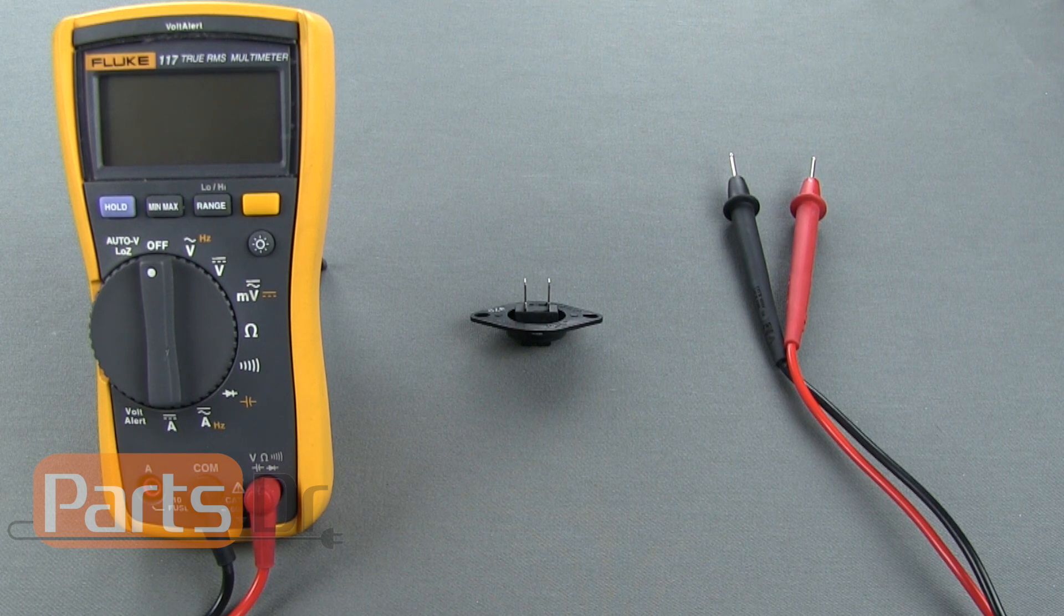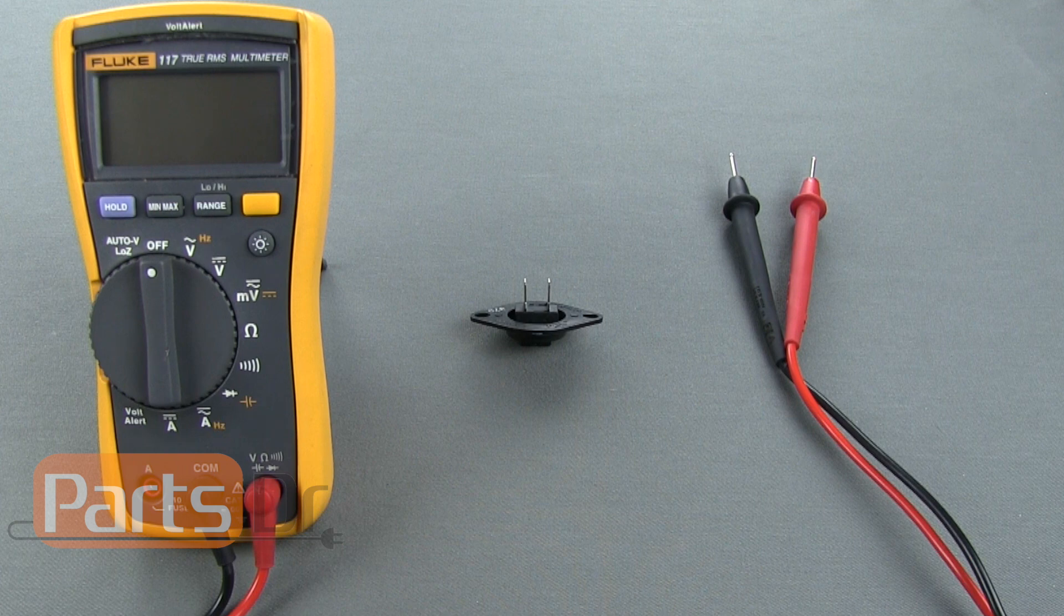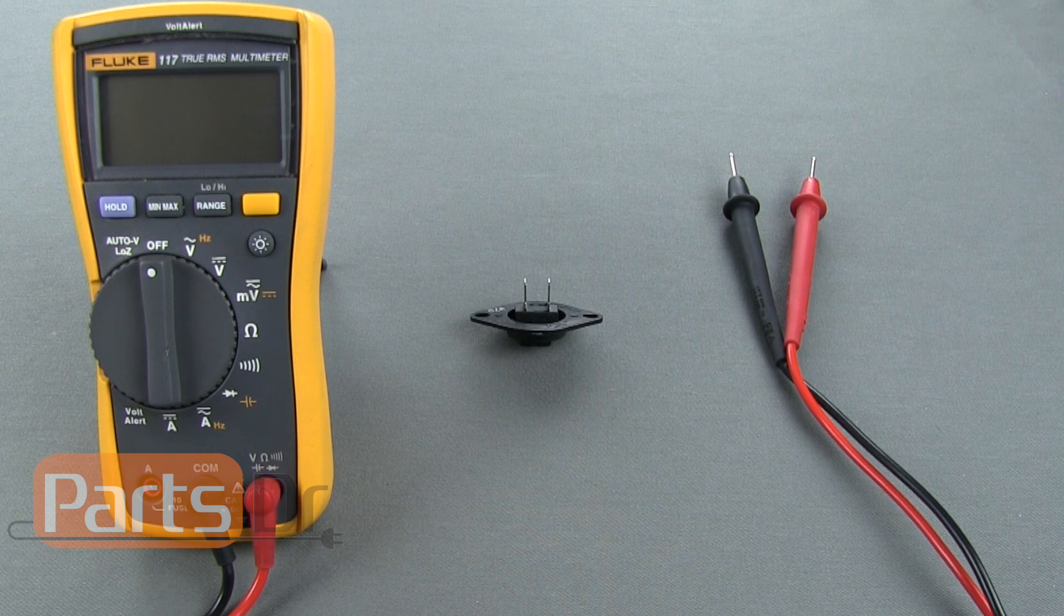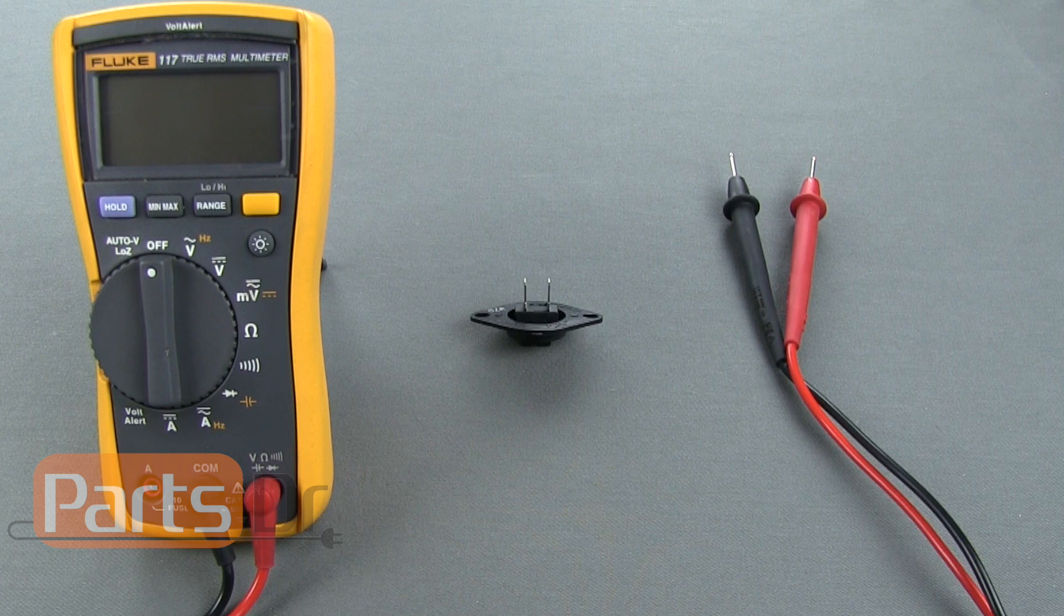The thermistor is a temperature sensor that measures the air temperature inside the dryer for the control board so it can maintain the desired temperature inside the dryer.